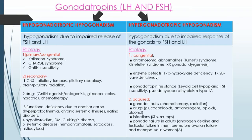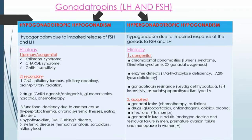Hypergonadotrophic Hypogonadism is due to impaired response of the gonads to FSH and LH. Etiology is divided into congenital and acquired. Congenital causes include chromosomal abnormalities such as Turner syndrome and Klinefelter syndrome, gonadal dysgenesis, and enzyme defects including 17-alpha hydroxylase deficiency and gonadotrophin resistance.